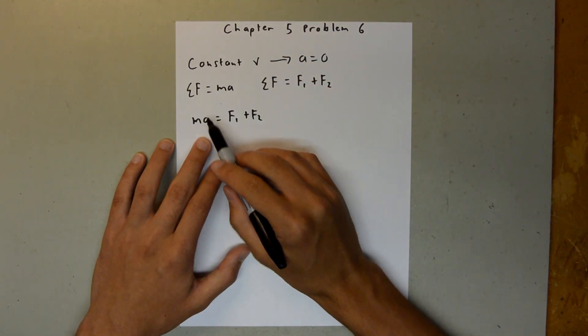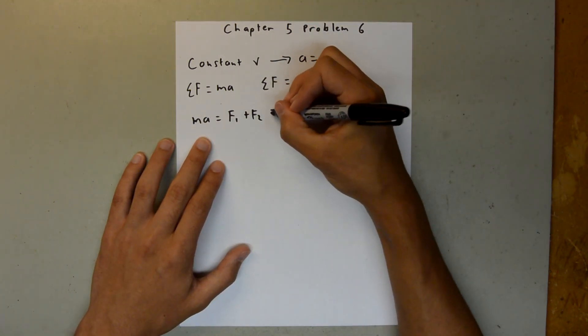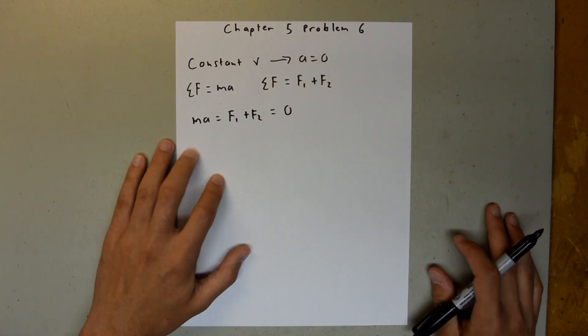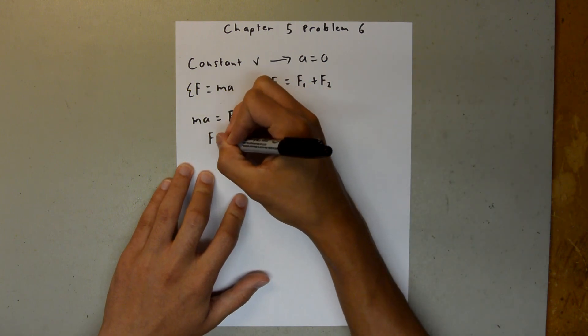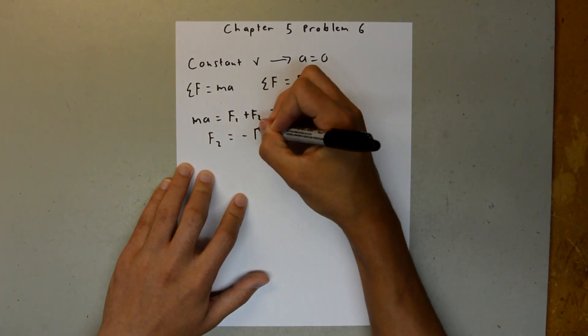and since Ma has A in it and A equals zero, we can say this equals zero. Which means that if we move this F1 to the other side, we get F2 is equal to negative F1.